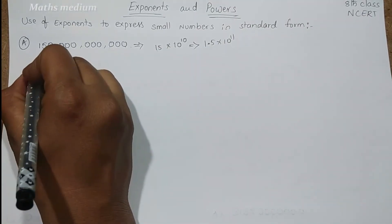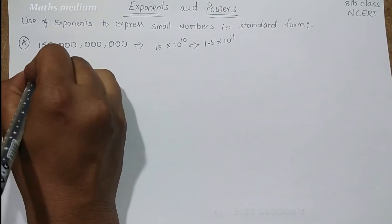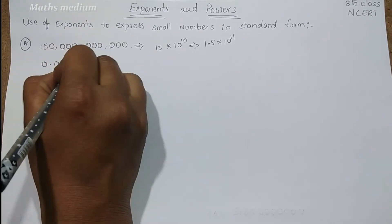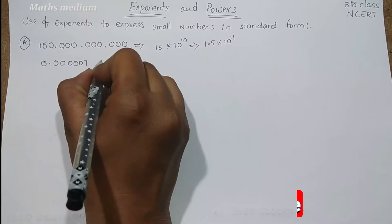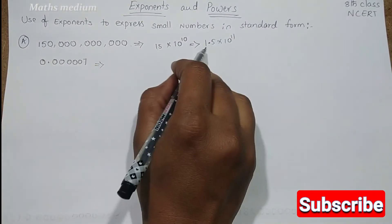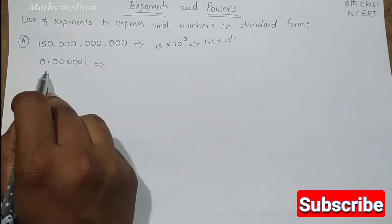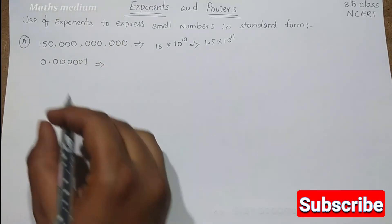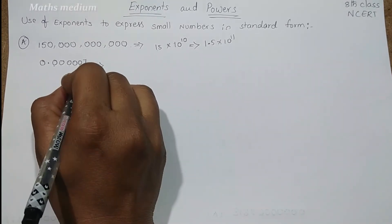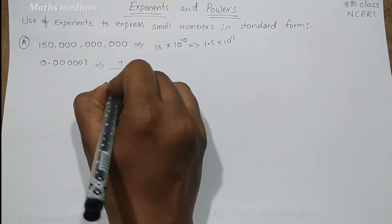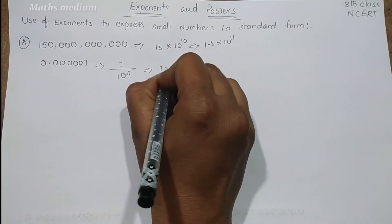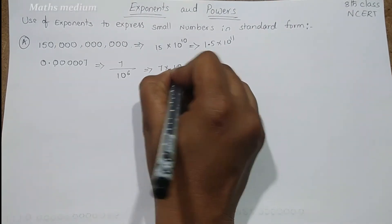Next, if you take another number with a decimal point: 0.00007. How are we going to write this? This is a decimal number. See, we count 1, 2, 3, 4, 5, and 6 places. So we can write it as 7 by 10 power 6, which means 7 into 10 power minus 6.